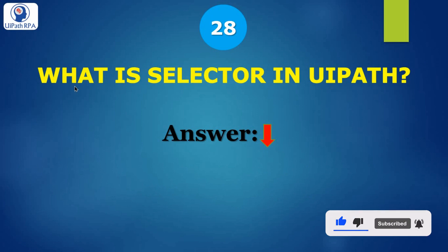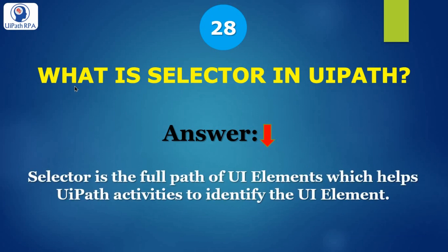Question 28: what is a selector in UiPath? A selector is the full path of UI elements, which helps UiPath activities to identify the UI element. As humans we can see any elements — any button, text field, label — but UiPath activities cannot see that. So when we indicate on a specific element, it will automatically generate a selector, which is the full path of that UI element, so that UiPath activities can go and click on it or type there.